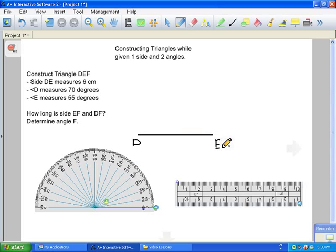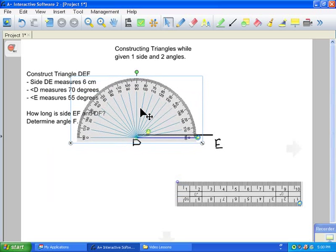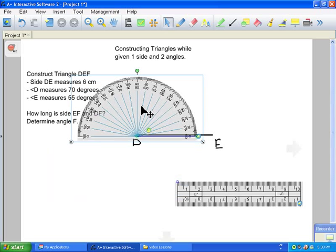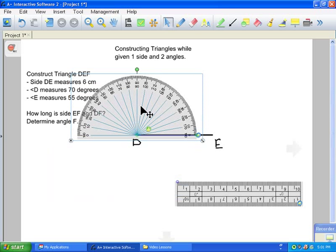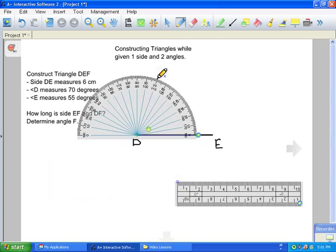We're going to start with our second known piece of information, which is angle D. And we know that angle D is going to measure 70 degrees. So we're going to take our protractor and we're going to go to angle D. We're going to place it at angle D, right at the point and right across the line. Since 70 degrees is an acute angle, we're going to be moving to the right side of the protractor. We're going to take our pencil and we're going to find where 70 degrees is. And once again, you're just going to put a nice little dot right at the edge of your protractor.